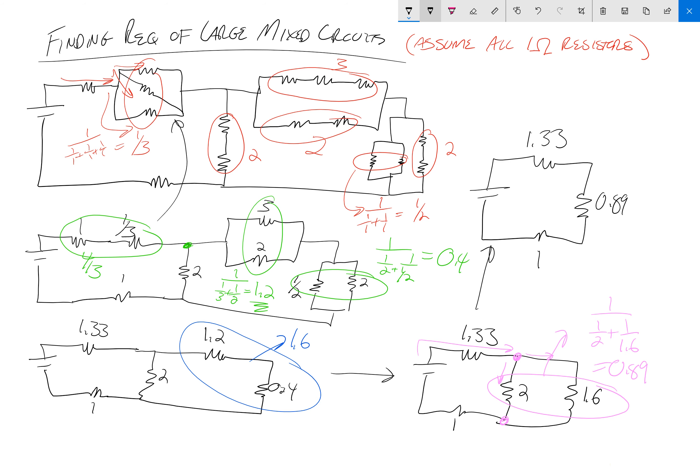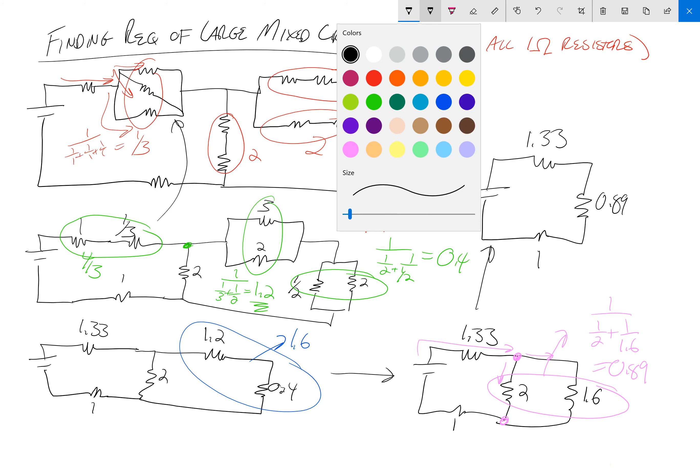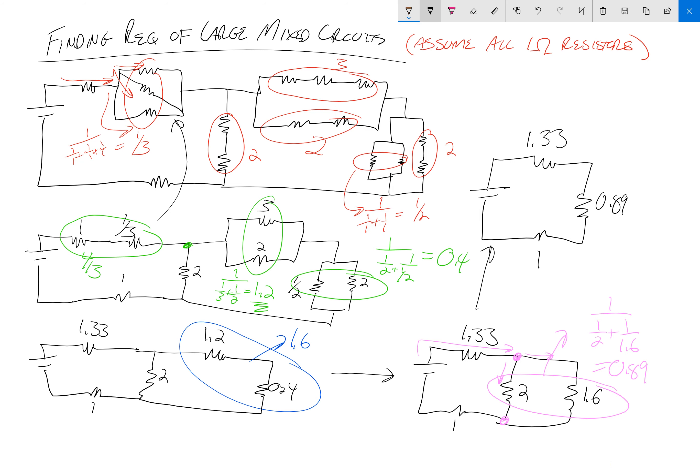Hopefully you could tell right away, this should be pretty easy, that these—I'm running out of colors, we'll go with brown—are all in series with each other because the current must go through each of them, and those you simply add. So we have the 1.33, the 0.89, and the 1, and we get 3.22 ohms as our final answer for what is the total resistance of this circuit.